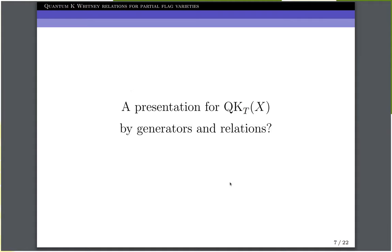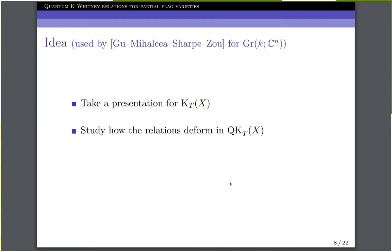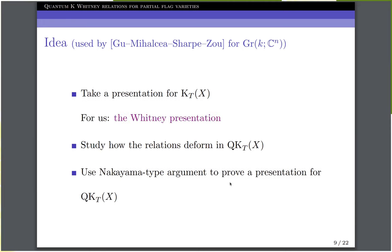Now we may ask for a presentation for the equivariant quantum K-theory ring by generators and relations. We can use the recipe which was used by Gu, Mihalcea, Sharpe, and Zou for Grassmannians. So first, we start with a presentation for equivariant ordinary K-theory. Then we look at the relations in this presentation and study how they deform in the quantum case. And finally, we use some Nakayama-type argument to prove that the deformed ring is a presentation for quantum K-theory. So for us, the presentation for ordinary K-theory that we start with is the Whitney presentation, which I will describe next.